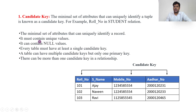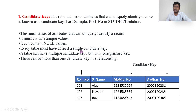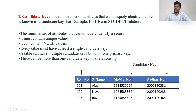Important points about candidate key: it is a minimal set of attributes and must contain unique values. However, it may contain null values — for example, some person may not have a mobile number, so that field can be null. Every table must have at least a single candidate key. A table can have multiple candidate keys, but only one primary key. The primary key is part of the candidate key. There can be more than one candidate key in a relation.